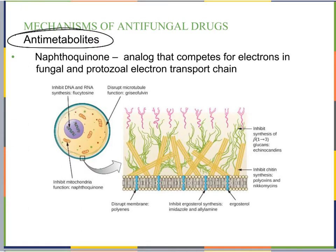The anti-metabolites include naphthoquinone, which inhibits mitochondrial function. It's an analog that competes for electrons in the electron transport chain in fungal and protozoal cells. By competing for electrons, it steals them from the electron transport chain, preventing the gradient needed to make ATP. Without ATP, the fungus can't divide and make more copies of itself.